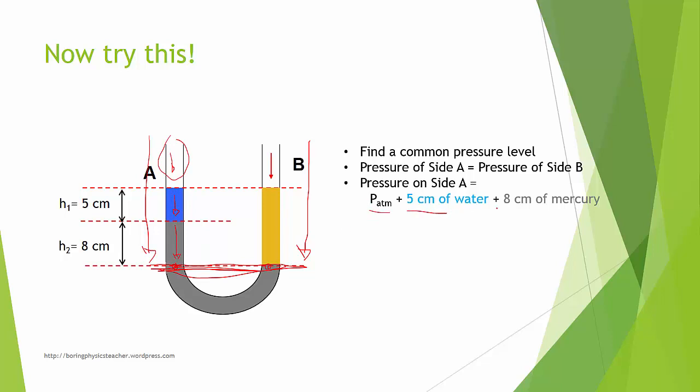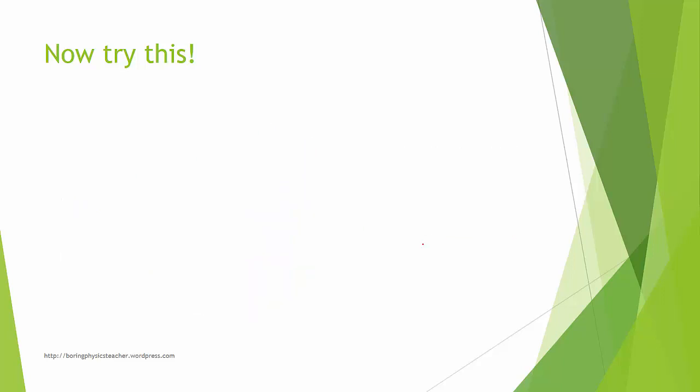So there are actually three components. Similarly for pressure at side B, you'll find that the pressure of side B is actually the pressure of the gas over here and the pressure of the oil, which is 13 centimeters.